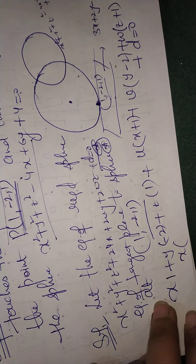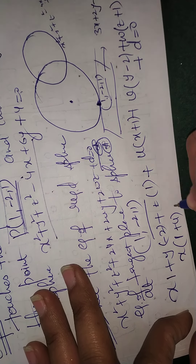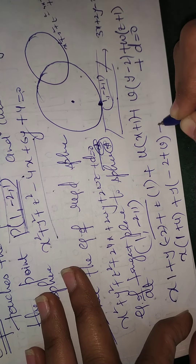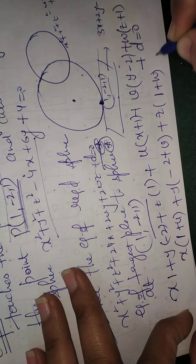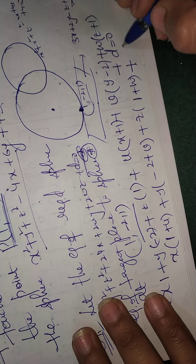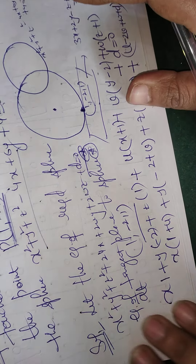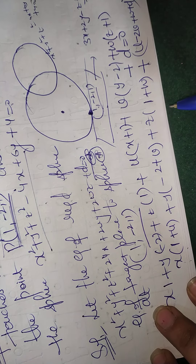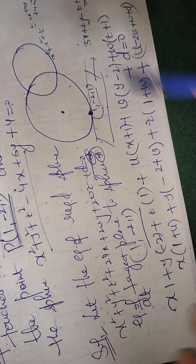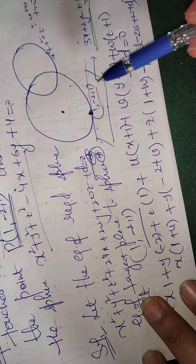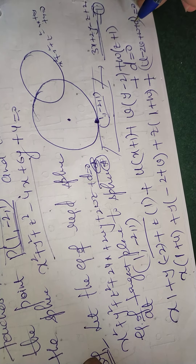Collecting terms, the coefficient of x is (1 + u), coefficient of y is (−2 + v), coefficient of z is (1 + w), and the constant term is (u − 2v + w + d). But the given plane is 3x + 2y − z + 2 = 0. Since both equations represent the same plane, the ratio of their coefficients must be equal.